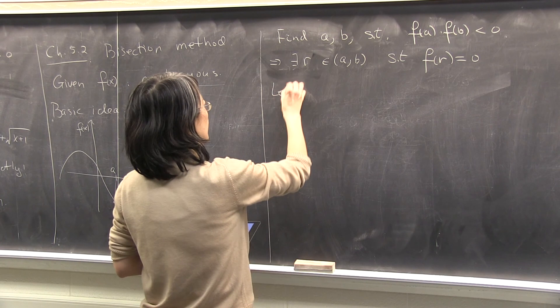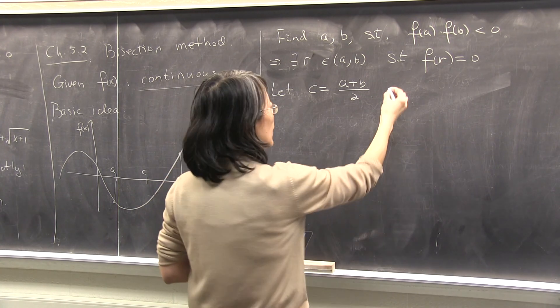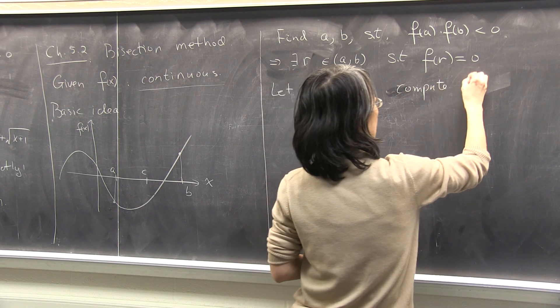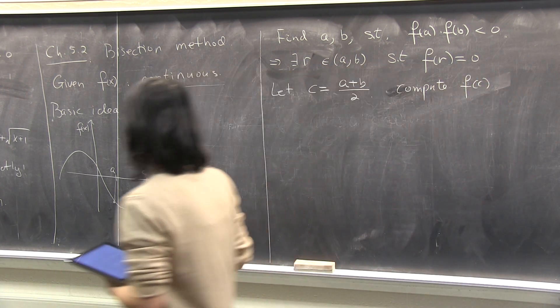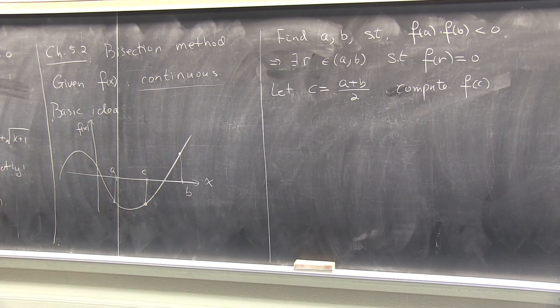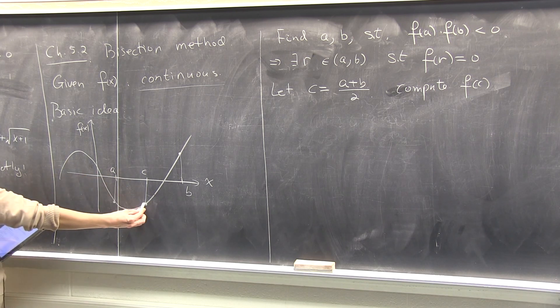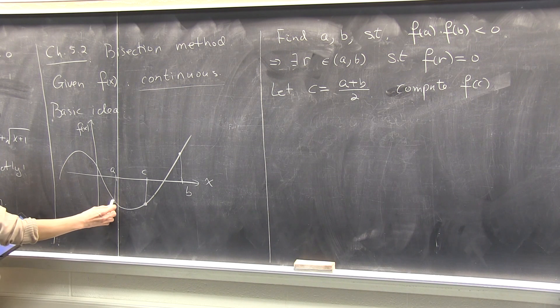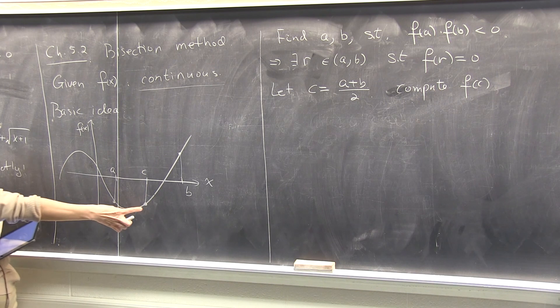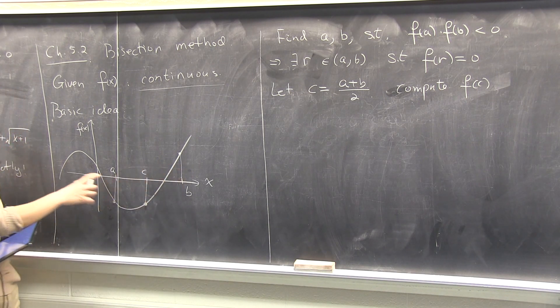Now I find the midpoint c equals to a plus b half, and then I evaluate the function, compute f at c. So in this example, I computed f at c, and I found that it's negative. So, f of a, c will have a fixed sign, and f of a and f of b, they have opposite sign. So no matter which sign f of c has, it will be opposite to one of them, either a or b. Agree?